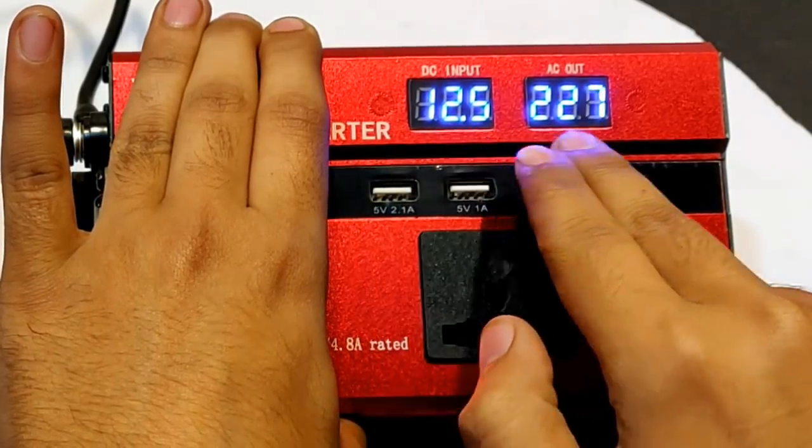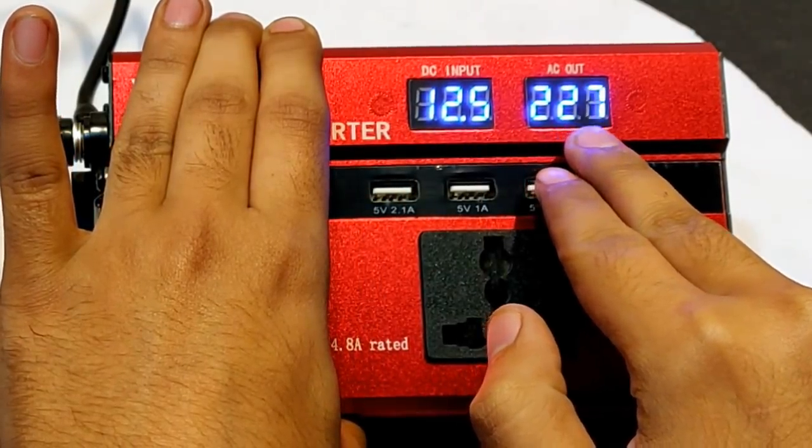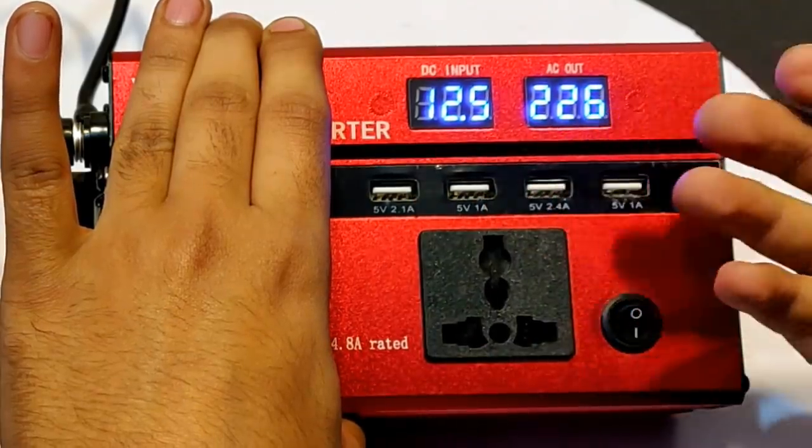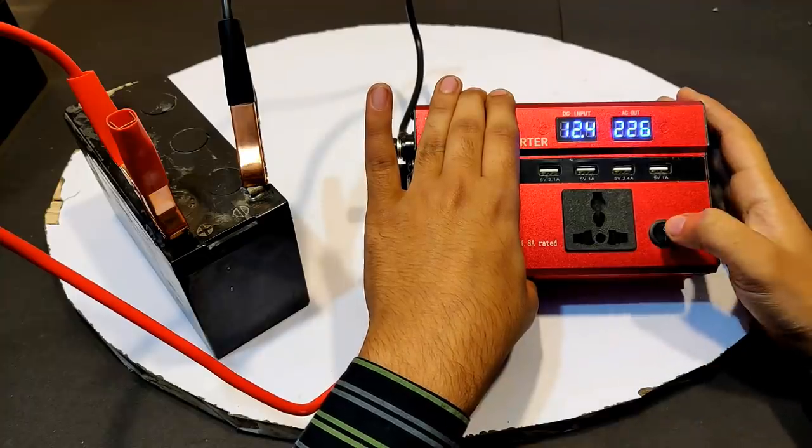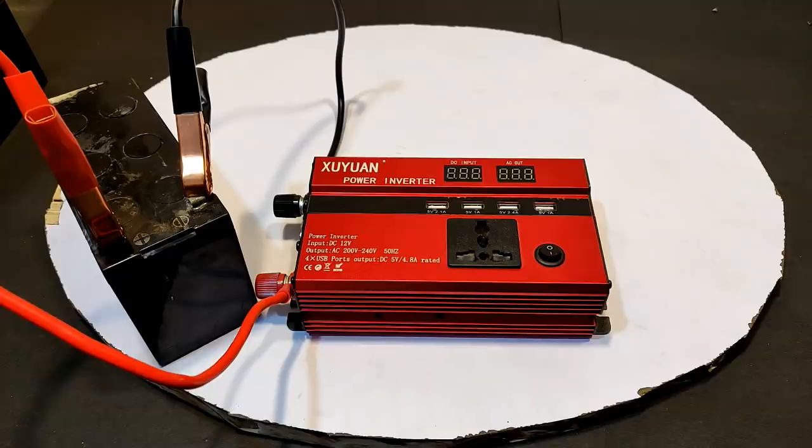DC input 12.5 volts at an AC output of 227 volts shows that it is working fine, but when I connect a load to it, it's going to drain really fast. Let's turn it off. Now a 100 watts bulb.